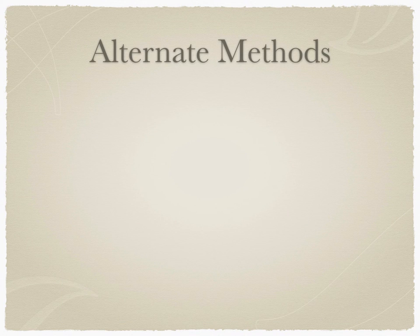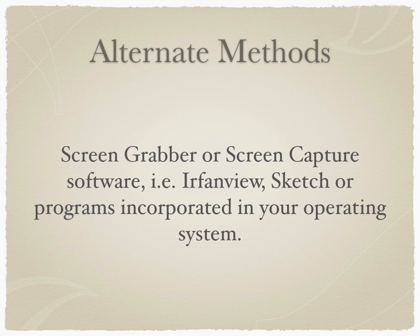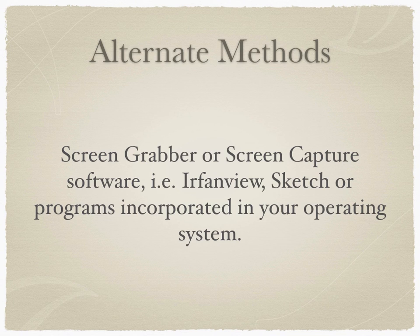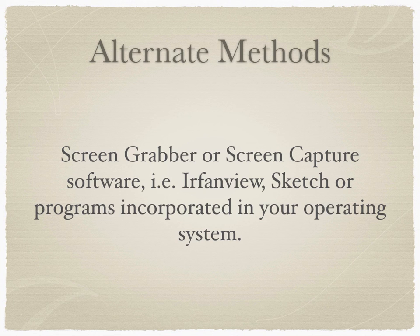There are alternate methods of uploading and acquiring photos from Ancestry, FamilySearch, and other programs. There are programs called screen grabbers or screen capture programs, including IrfanView and Snagit, as well as tools incorporated in your operating system. Both Windows and Apple OS X have ways of making screenshots or screen grabs, and those become images that can be uploaded. You can do the same thing with a smartphone, tablet, or iPad. These processes are individual to the particular device you're using, so you'll need to look for instructions online on how to create a screenshot on your particular device.